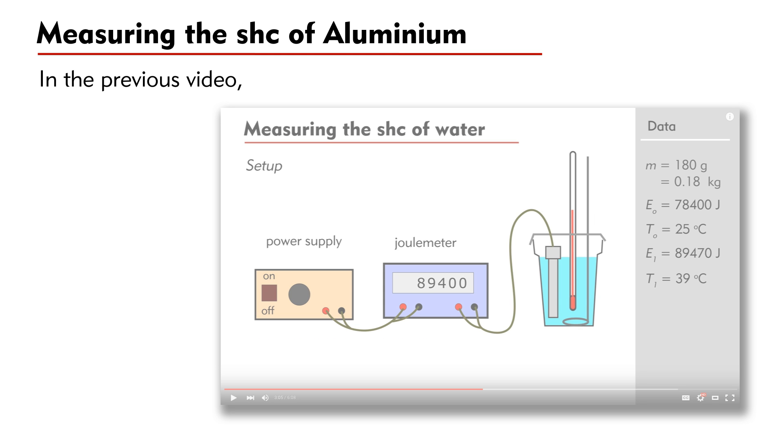In the previous video, you have learned an experiment to measure the specific heat capacity of water. To measure the counterpart of solid metal, the setup is a little bit different. However, the principle is the same.